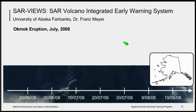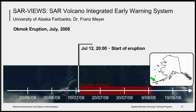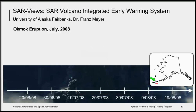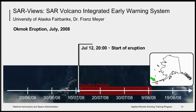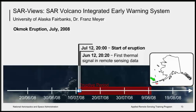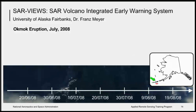This is another case in which SAR was used to monitor a volcano — the Okmok eruption in July of 2008. Okmok is located on one of the Aleutian Islands. The eruption actually took place on July 12th of 2008 and had a long eruptive period. The first thermal signal in remote sensing only appeared 20 minutes after the eruption began, which is important to know that the eruption is ongoing but gave no forewarning.